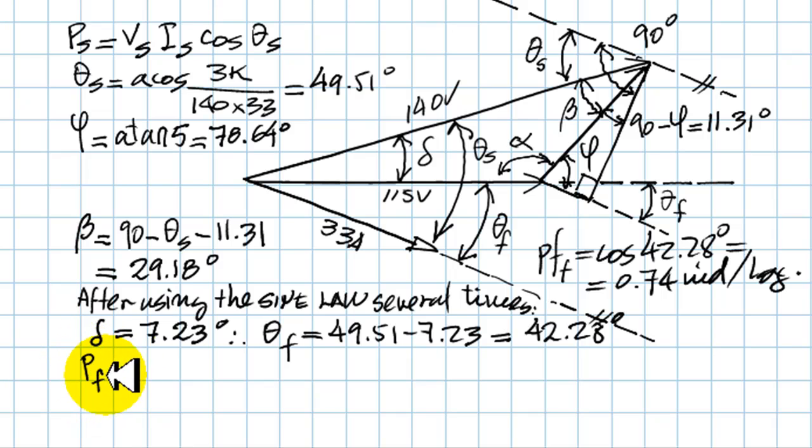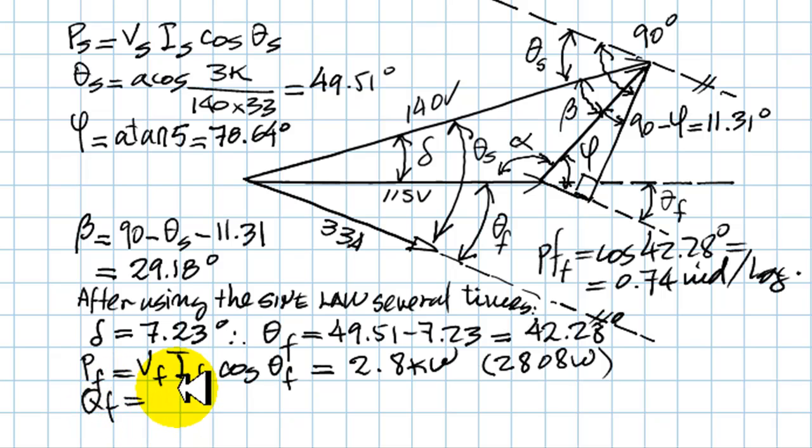The power at the factory is voltage at the factory, which is 115, times the current at the factory, which is 33 amps, times that power factor, cosine of theta f, which is 0.74. You multiply all of that, and you get 2.8 kilowatts. If you want to be picky, it's 2,808 watts. And Q, the reactive power absorbed by the load, is 115 times 33 amps times the sine of that angle that we just found. And that is 2,553 VAR, approximately 2.55 kilovars.